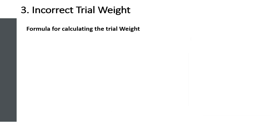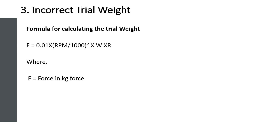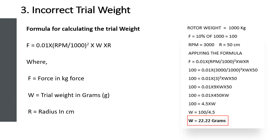The formula for calculating trial weight is based on the first thumb rule. In this formula, F is the force in kgf, W is the trial weight in grams, and R is the radius in centimeters — units can be adjusted as required. For example, with a rotor weight of 1000 kg, the force is 10% which is 100 kgf. With an RPM of 3000 and radius of 50 centimeters, applying the formula gives a trial weight of 22.22 grams.